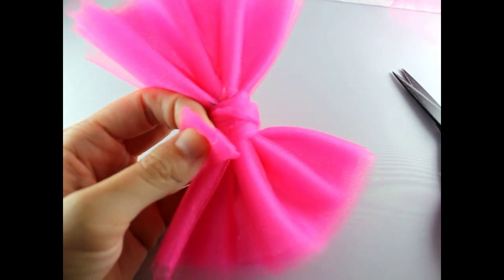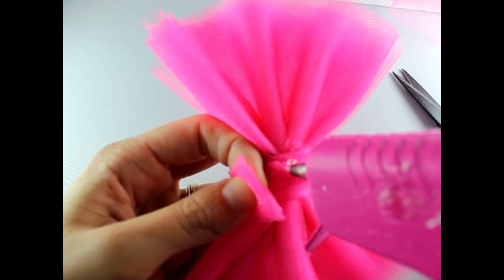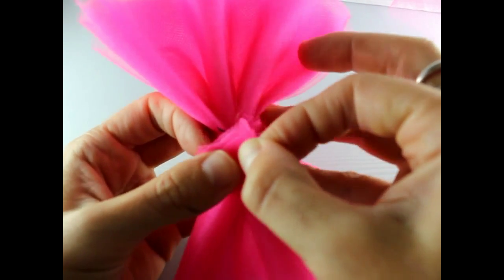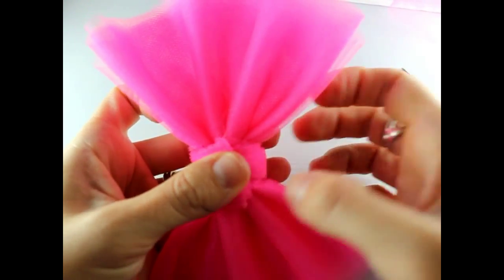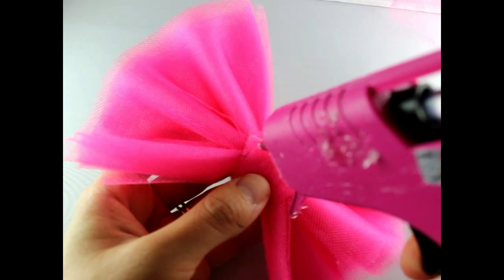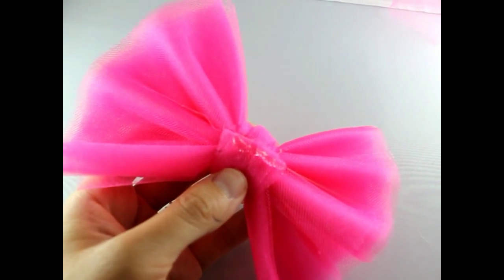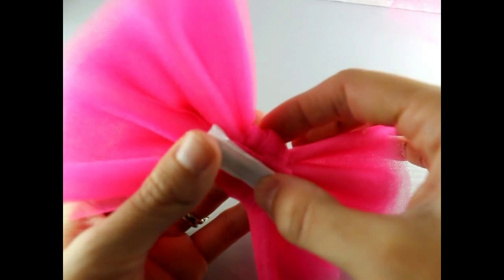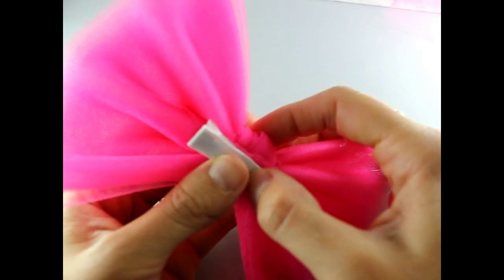Get some hot glue and pull it over. Get some hot glue and get your lined alligator clip and put it right down on the back. And hold.